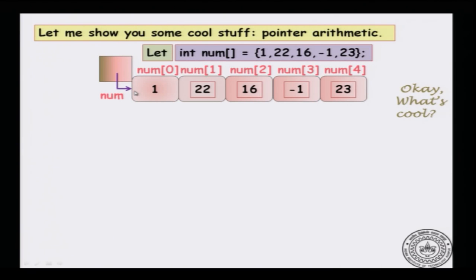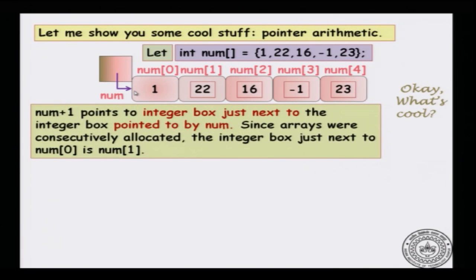num points to the first location in the array. If num points to the first location, you can do the following: num plus 1. num plus 1 would point to the integer box right next to the integer box pointed to by num. And we also know that arrays are consecutively located, so the integer box next to num is exactly num[1].